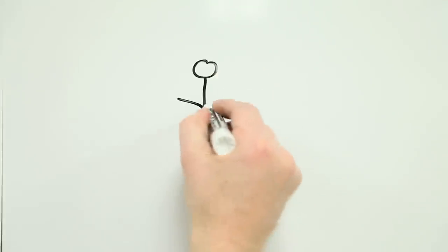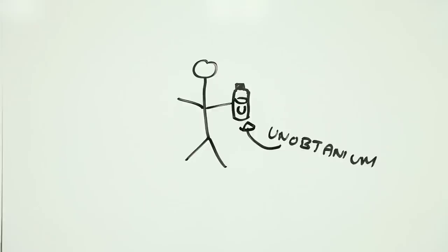Imagine for instance you're handling some mystery substance. Let's call it unobtanium. How would you go about working out what the risk is?